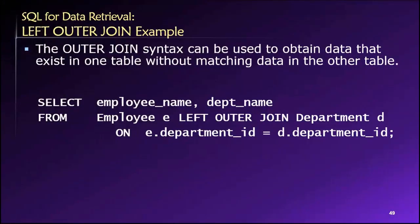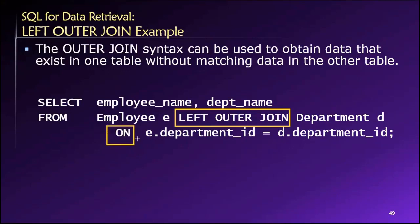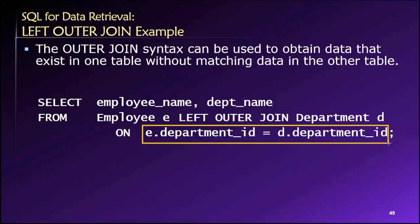Let's take a look at a left outer join. The syntax is very similar to what we saw with an inner join, except that instead of the words 'inner join' we have 'left outer join'. We still have our ON clause, and we're still matching tables together — in this case pulling data from our employee table and our department table, linking them based on matching values of department ID.